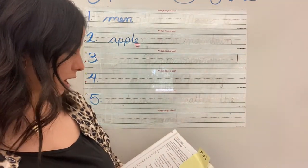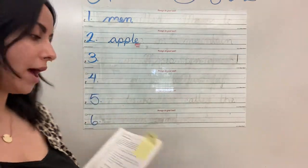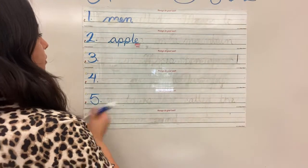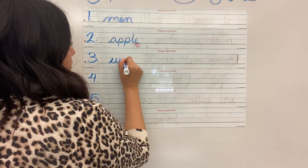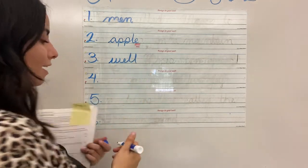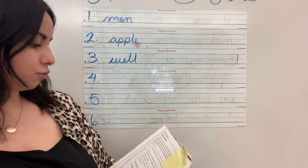All right, after apple, Christian, spell well for me. How do we spell well, Christian? W-E-L-L. Excellent. We leave well alone.